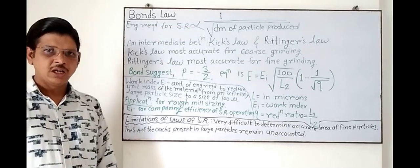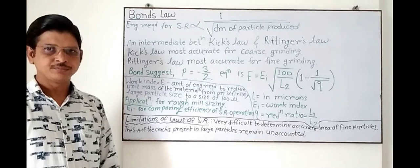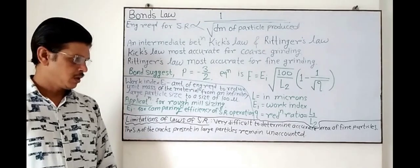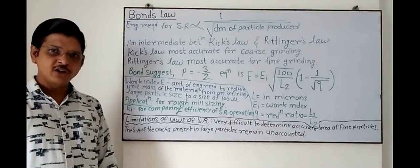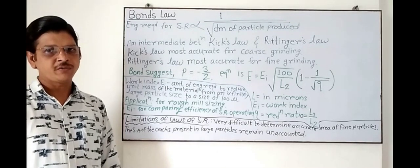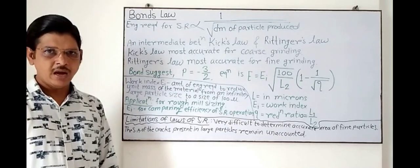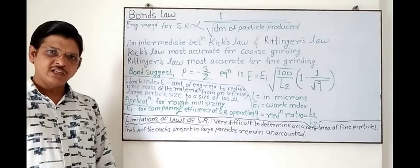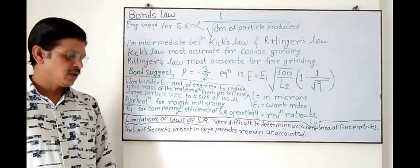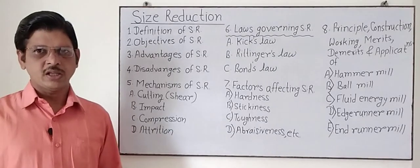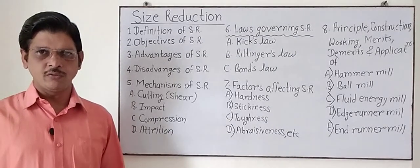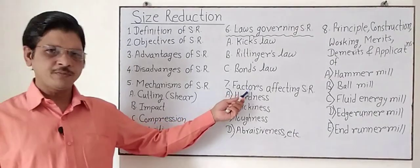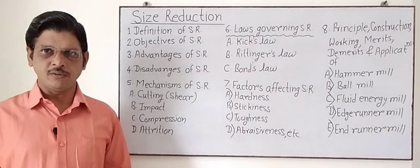Now, limitations of the laws of size reduction — that is, limitations of Kick's law, Rittinger's law, and Bond's law: it is very difficult to measure the area of very fine particles, and the surface area of the cracks present in the larger particles remains unaccounted. Students, thank you very much for watching this tutorial video. In the next lecture, we will study various factors affecting size reduction. Thank you very much.